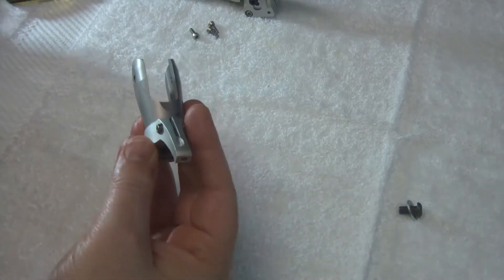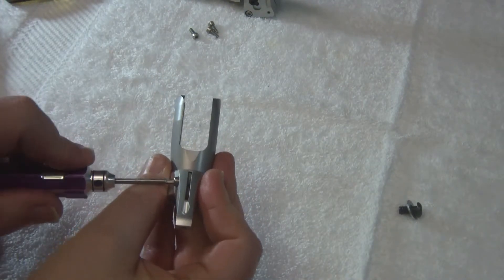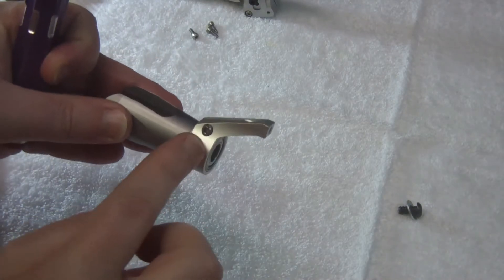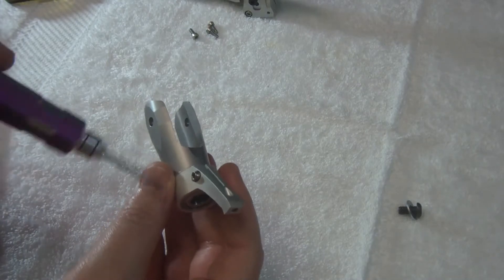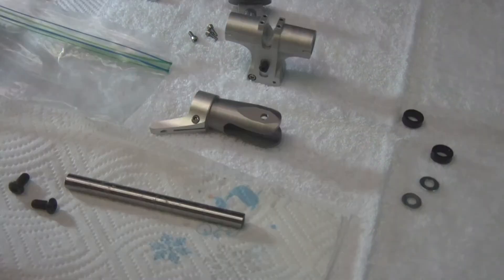What you want to do is tighten this all the way down. Then that is centered and you're going to want to use your thread lock. I'm going to take this all the way out, put some on, and put it back together.